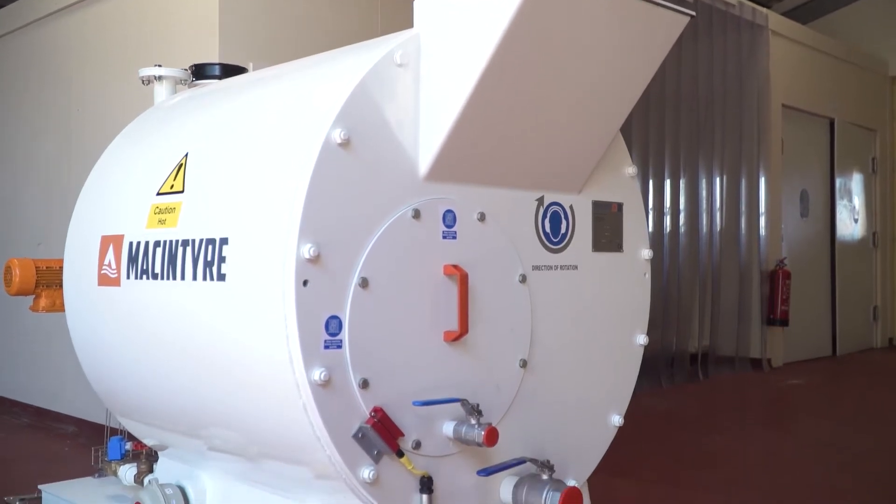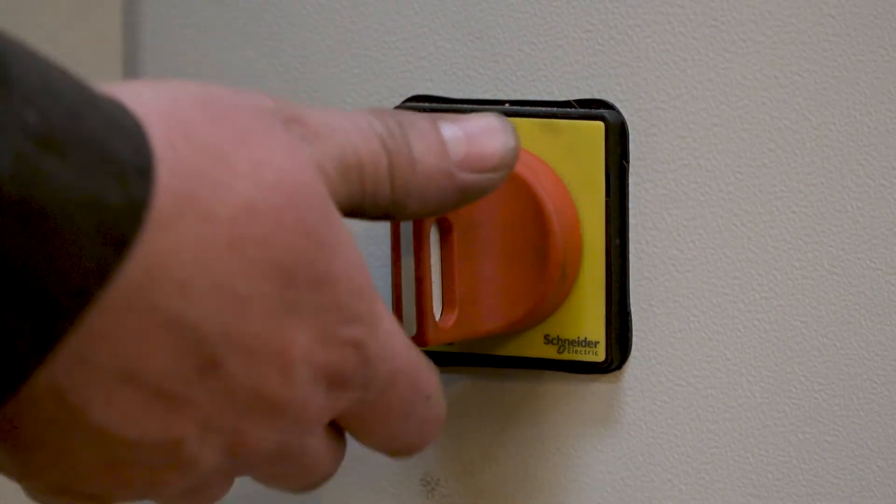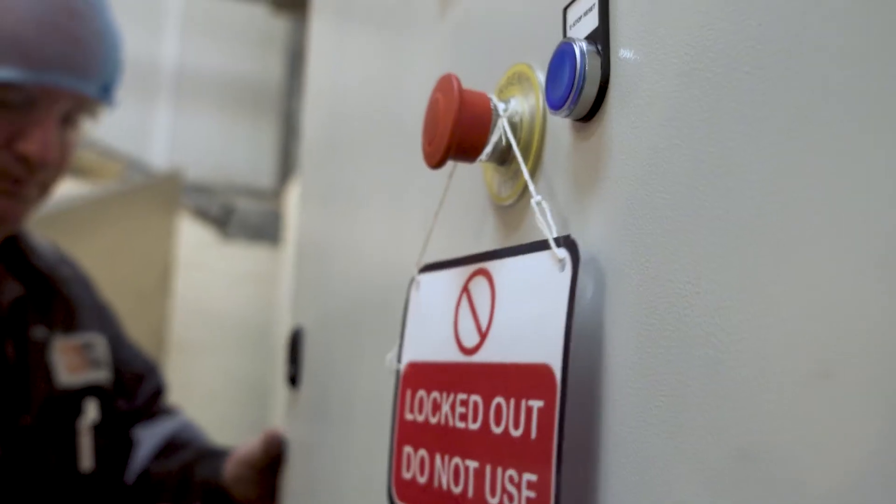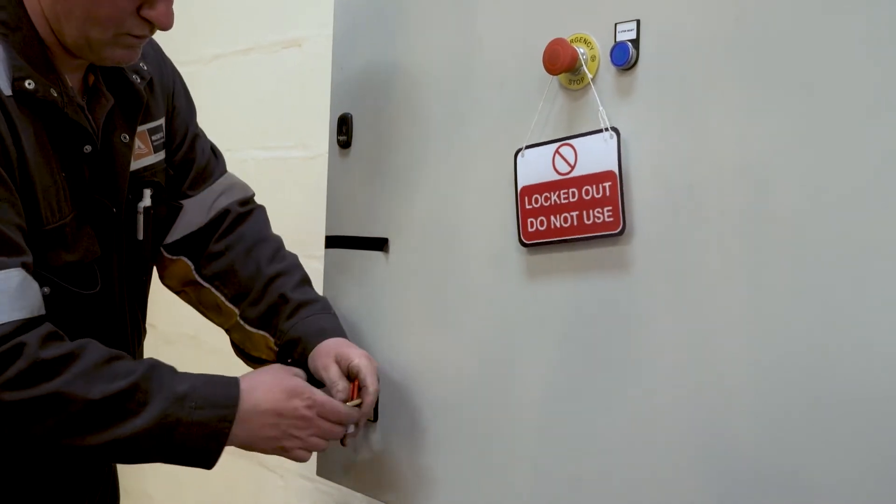First of all, ensure the machine is empty and clean before opening. Remove fuses from the control enclosure to isolate the electrical supply to the machine and ensure the control panel is locked off with a padlock and sign.